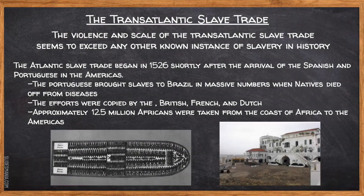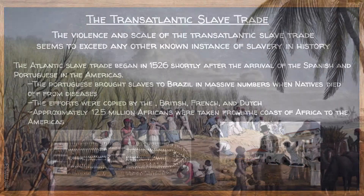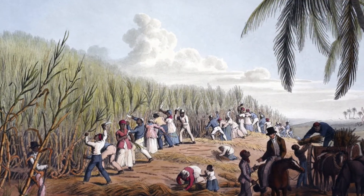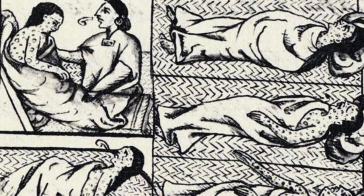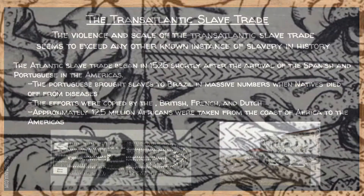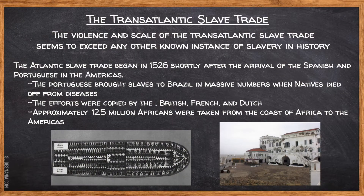It was the transatlantic slave trade that wreaked the most havoc on African societies. Europeans initially forced indigenous people to do the hard labor of mining and farming, but European diseases wiped out large portions of these coerced laborers. During this time, Western European countries such as Portugal, Spain, and England were developing their naval technology.